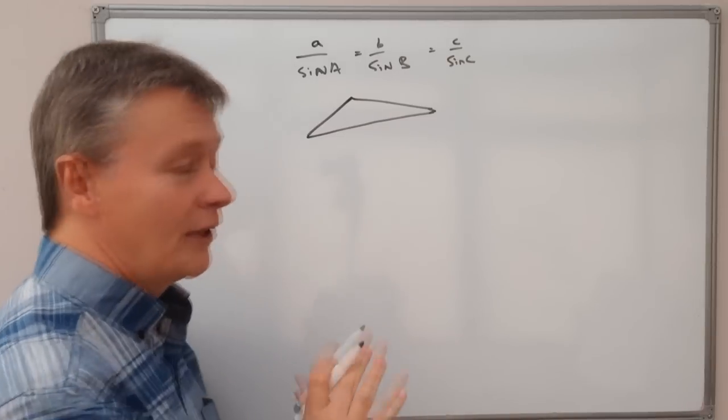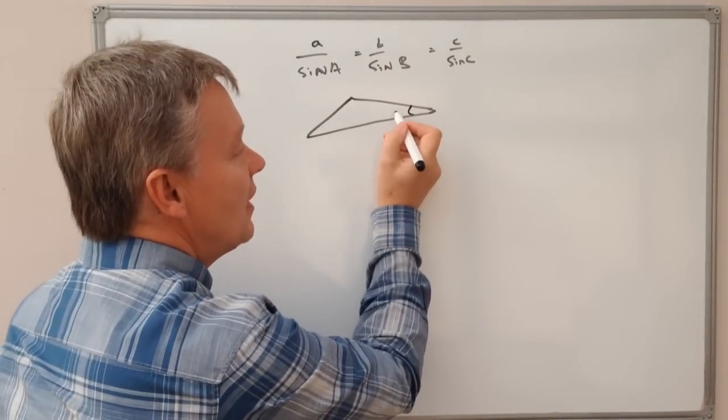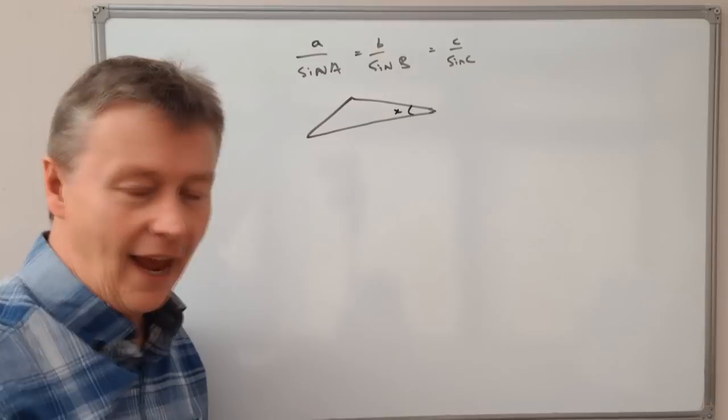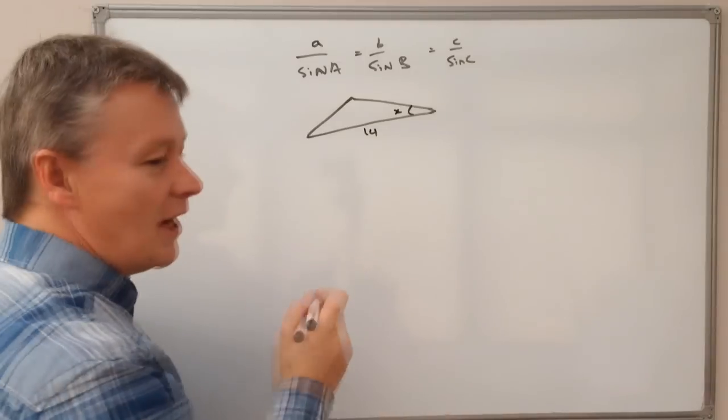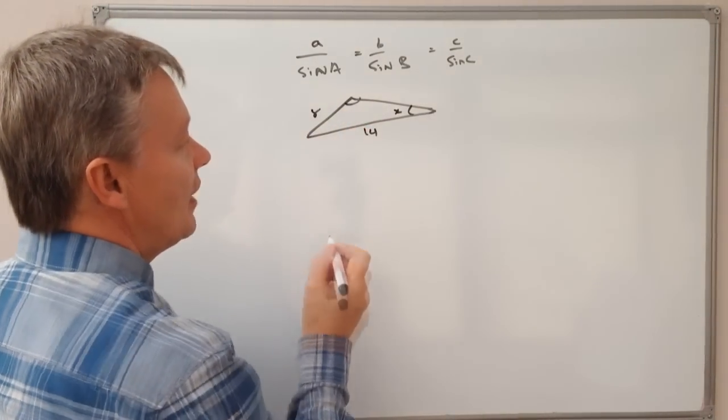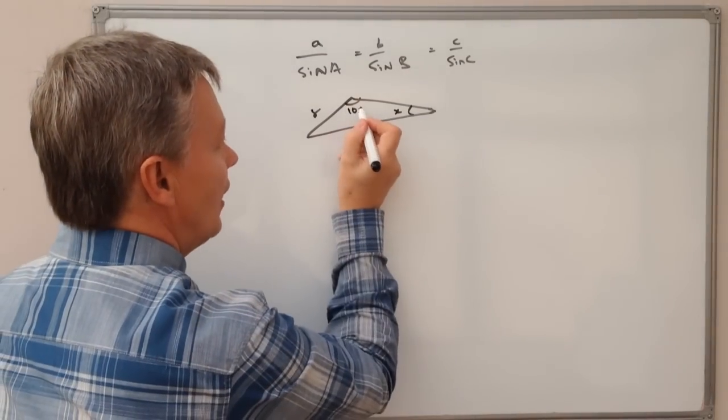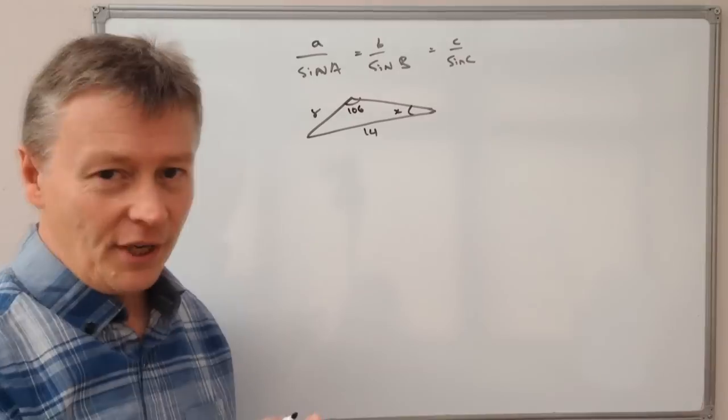In this particular video we're going to be looking at calculating an angle. So it's this particular angle and they're going to call it X. And the information we get is that that's 14 and this bit is 8 and we know this bit which is 106 degrees. That's all the information we get.